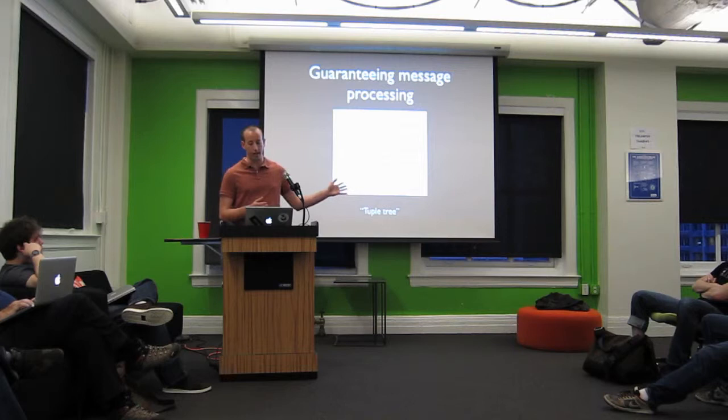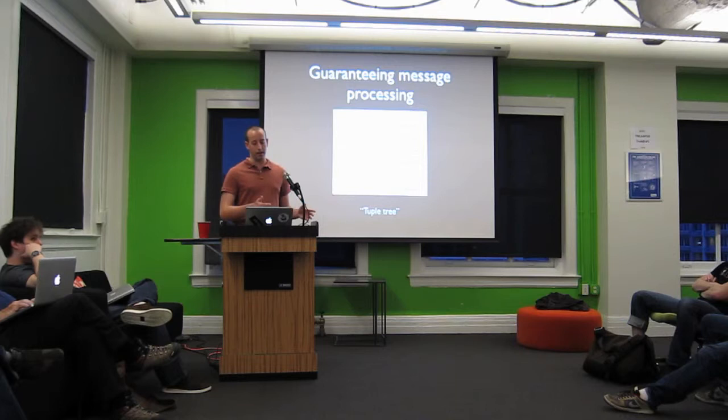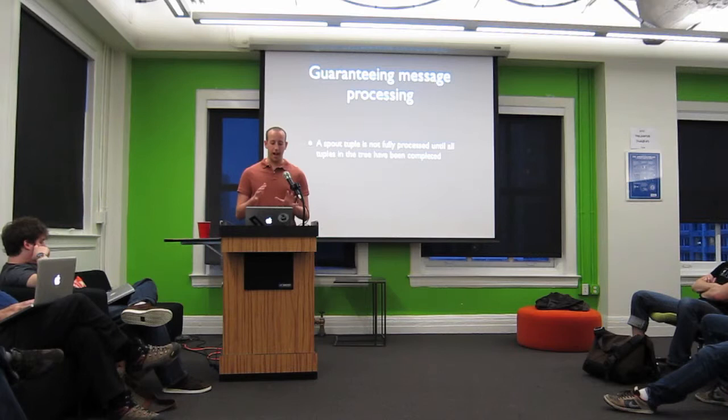Storm calls this the tuple tree. For example, in the streaming word count example, you have a sentence emitted which is your spout tuple, then you have words emitted based on that spout tuple, and then you have the word counts emitted based on the word tuples.